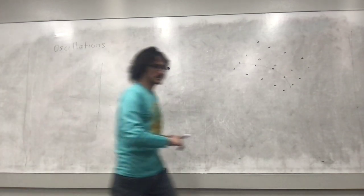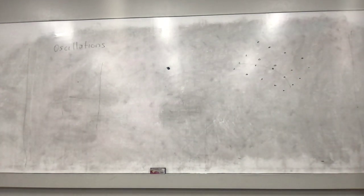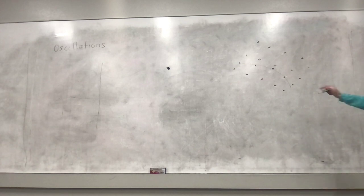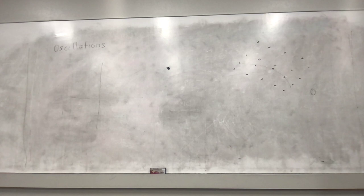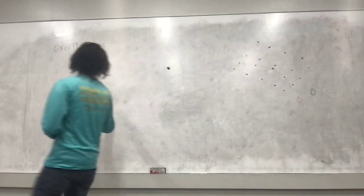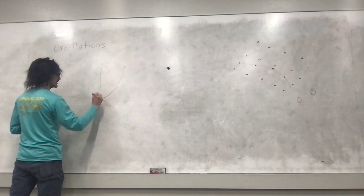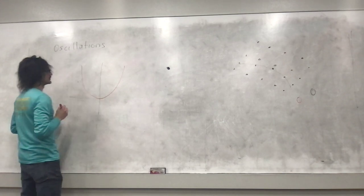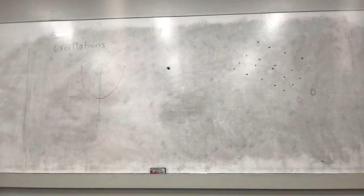So a parabola will definitely produce an oscillation, but why? We put our parabola here — it's a little bit asymmetric, sorry. What causes the motion to be oscillatory? Turning points.